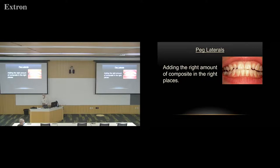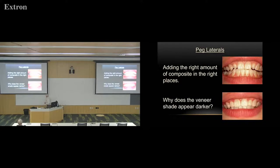Peg laterals — you've heard about peg laterals, and we see quite a few of them. What are we going to do about that? If we do a porcelain veneer, crown, or zirconia crown, we have to prepare that tooth. If we use composite, we don't have to remove any tooth structure — we just add what's missing. You'll notice the shade is just a little bit darker on the laterals because I took the photograph right after I finished the case and didn't wait long enough for the centrals to rehydrate.